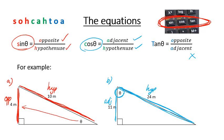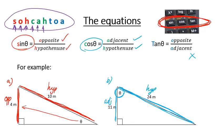A way to remember these formulas is SOH-CAH-TOA: sine is the opposite over the hypotenuse, cosine is the adjacent over the hypotenuse, and tan is the opposite over the adjacent. You're going to need to know these equations, so I would suggest you write them down and get to know them.